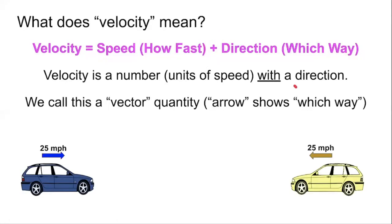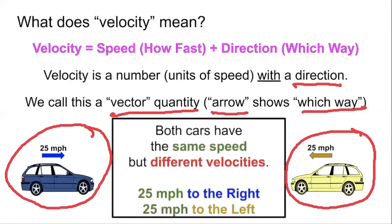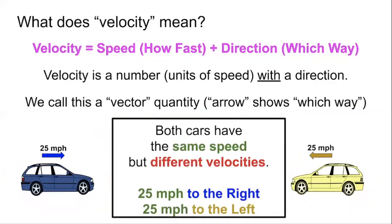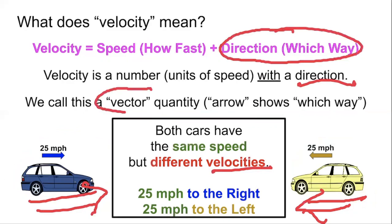Because direction is important, we identify velocity with a mathematical quantity called a vector. A vector is simply an arrow that shows which way the object is traveling. For example, this object is traveling at a speed of 25 miles an hour, and this object is also traveling at a speed of 25 miles an hour. So does that mean their velocities are the same? The answer is no. Although they have the same speed, they have different velocities because this object is moving to the right and this object is moving to the left. Because they have different directions, they also have different velocities — velocity cares about direction. It is a vector quantity.